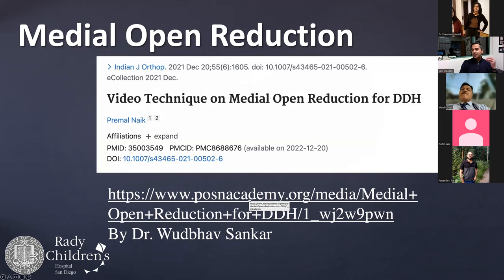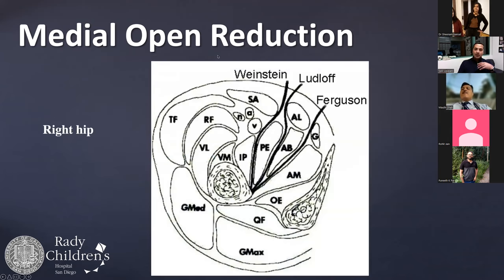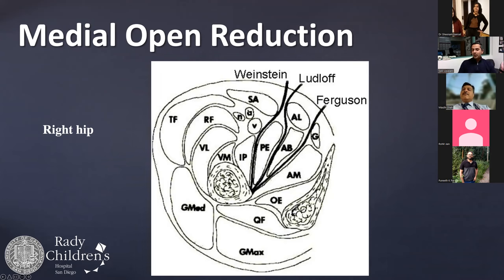There are good technique videos — one by Prem from the Indian Journal of Orthopaedics and one by Woody Sankar on the POSNA Academy website. The medial open reduction is a difficult procedure to film because you're operating in a tiny hole. There are three different approaches, all very similar, based on which interval is used. The main landmark is the adductor longus tendon. Weinstein goes between the femoral neurovascular bundle and pectineus; Ludloff goes between pectineus and adductor brevis; Ferguson goes between adductor brevis and magnus.